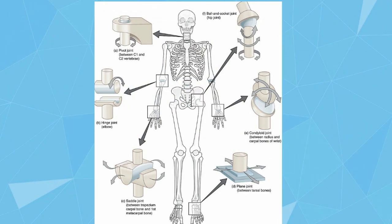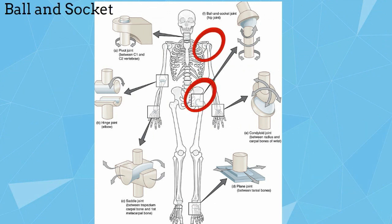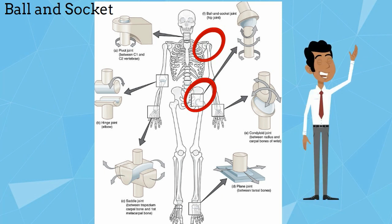Let's take a look at some of the different types of synovial joints we have in our body. First you have a ball and socket joint, and they are found at your shoulder and your hip. They allow you to move your shoulders and hips up and down and back and forth, and they have the greatest range of motion.